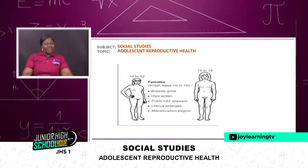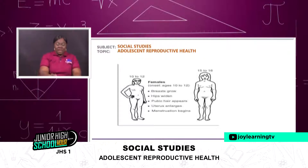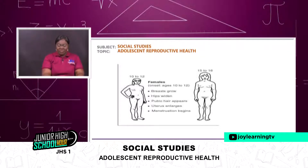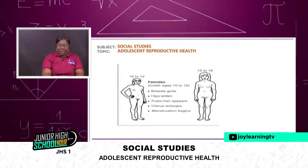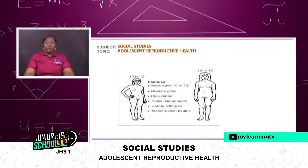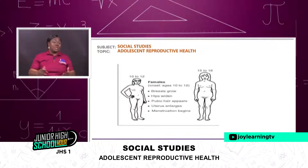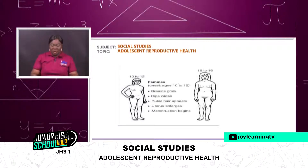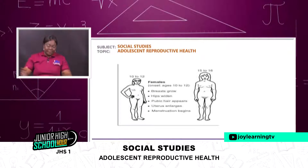Now there's another picture on your screen. You can see here a girl who is ten years old. Breast grows, the hip widens, pubic hair appears right there, the uterus enlarges — and as for the uterus, when it enlarges it's not seen, it's not obvious because it is in there, but it is part of it. And then menstruation also begins between this time.